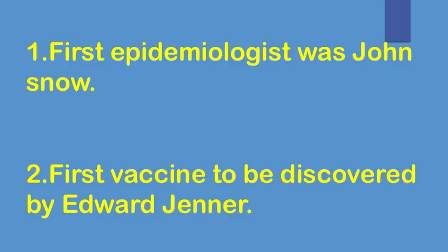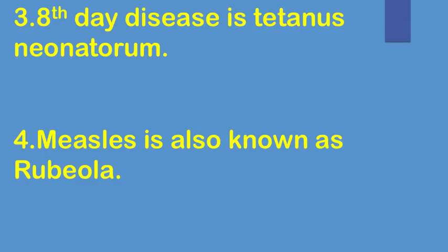The first epidemiologist was John Snow. Next, the first vaccine was discovered by Edward Jenner. Edward Jenner discovered the first vaccine.